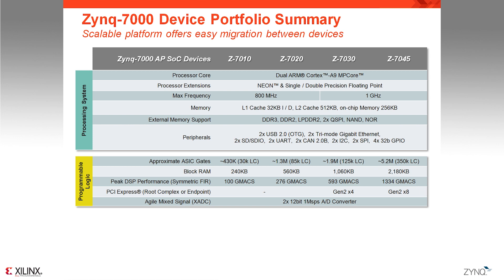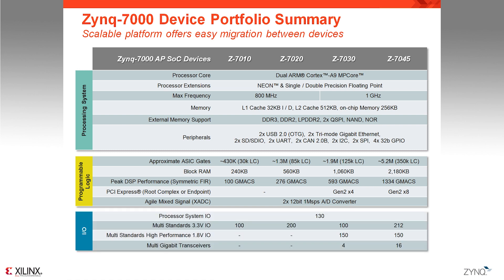As you can see, moving from left to right in the family table, the device gets more programmable logic, which also comes with more embedded memory and DSP blocks. The larger devices also come with a hard PCI Express block. Similarly, the devices come with more I/Os and transceivers as you select larger devices. This approach — one identical processing system across all devices with different programmable logic — gives you the possibility to create derivative products from your first design. Since your software code is completely portable, you can select Zynq as a platform for many of your developments.